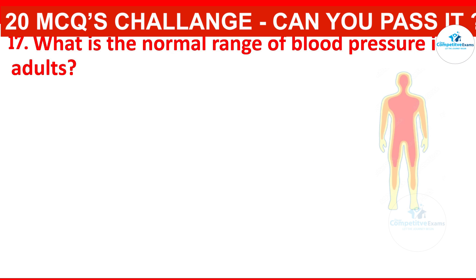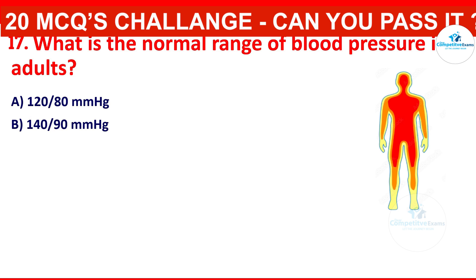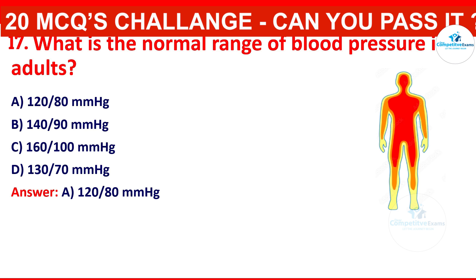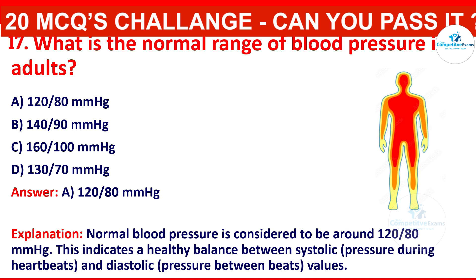What is the normal range of blood pressure in adults? Your options are: 120/80, 140/90, 160/100, or 130/70. The correct answer is 120/80 mmHg. Normal blood pressure is considered to be around 120/80 mmHg, indicating a healthy balance between systolic pressure during heartbeats and diastolic pressure between beats.